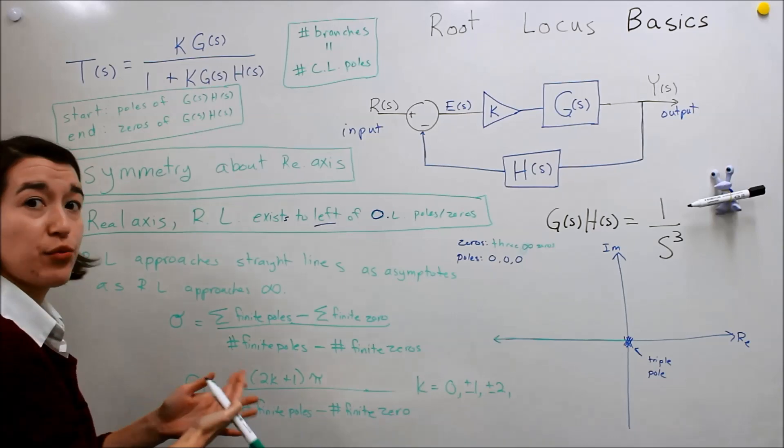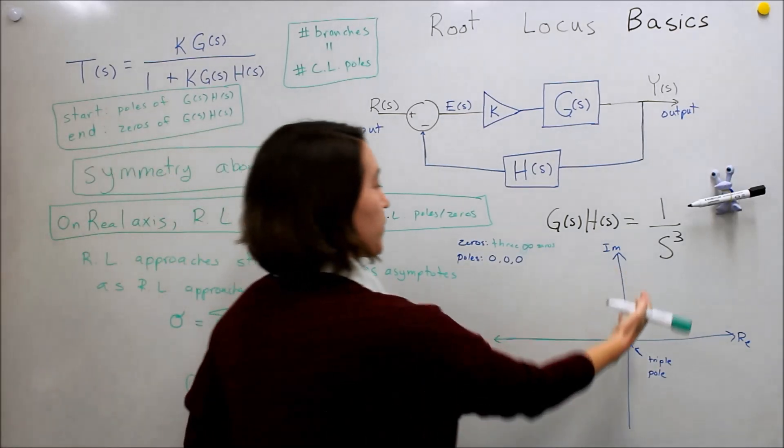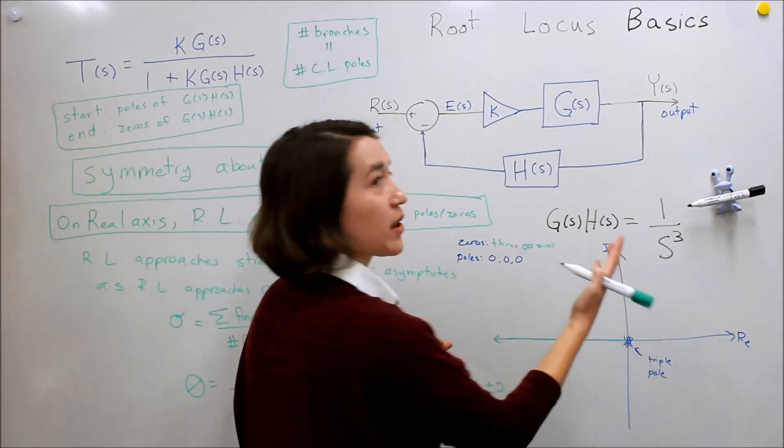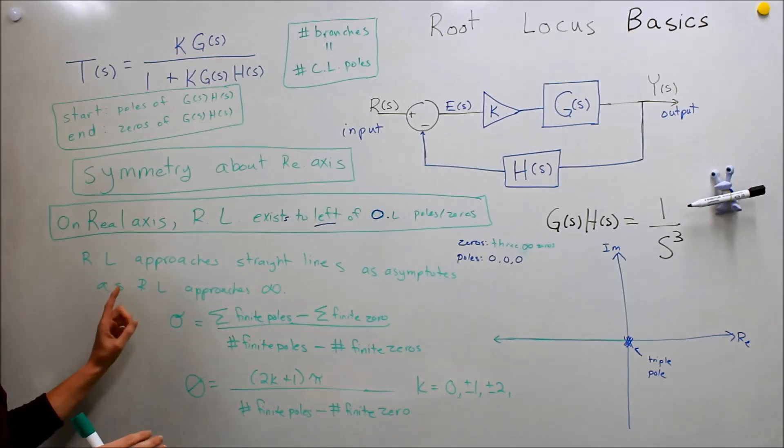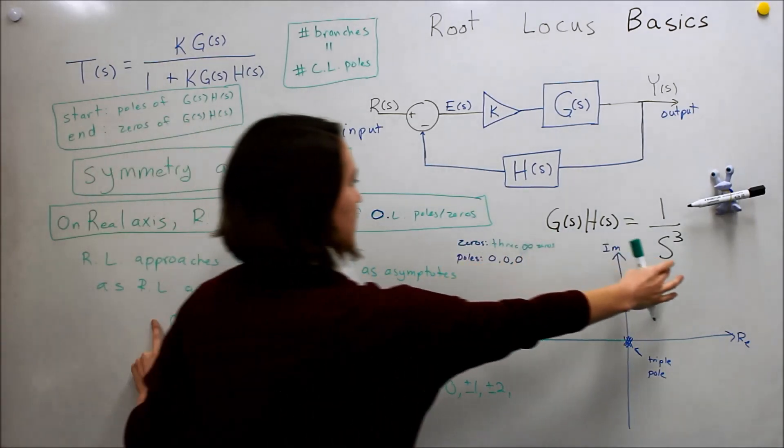So because we can only have three paths here - we have three poles, we need three infinite zeros - we'll get three different angles. So let's, this is a little bit confusing. This is just kind of something you would write down and memorize. Let's try to apply it to this and see what we get.